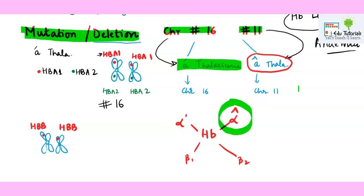The problem may arise in one allele or in both alleles — deletion can happen at one or both alleles located on chromosome number 11. Again, the alpha-cap chain will not be produced properly; as a result, the hemoglobin level will be less in the blood and ultimately the person will suffer from anemia.